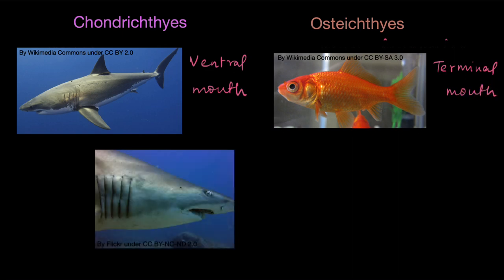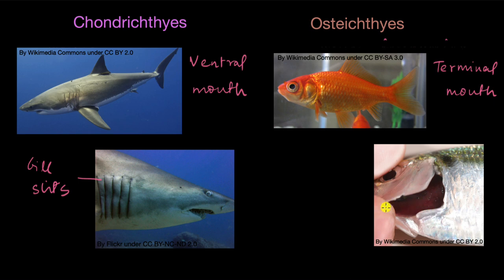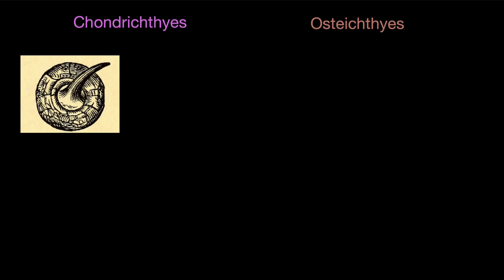As far as gills are concerned, both are fish and hence both have gills. In Chondrichthyes they have slits in their skin called gill slits, and the gills are present inside those slits. Whereas in Osteichthyes the gills are visible, and on top of the gills there is a covering called the operculum. So: gill slits versus operculum.